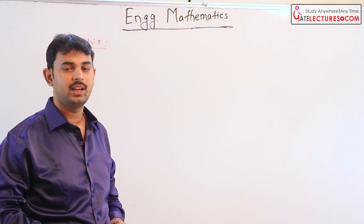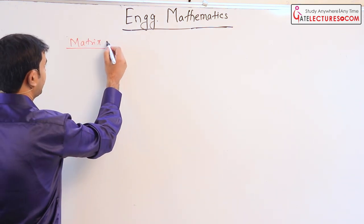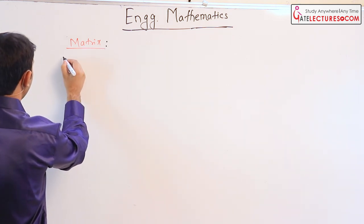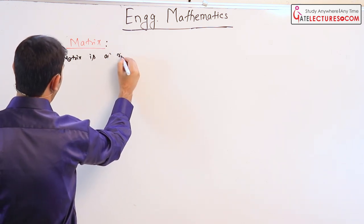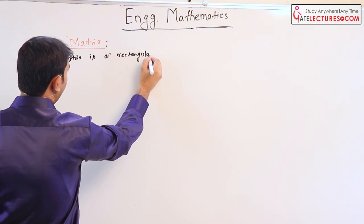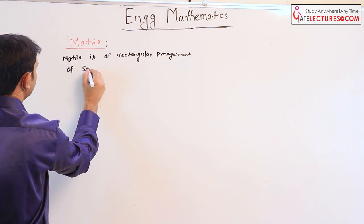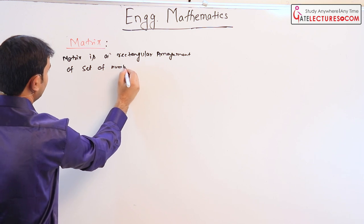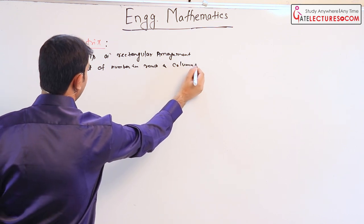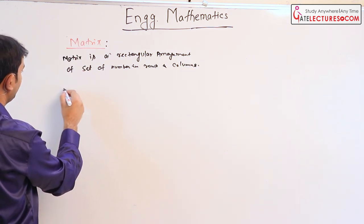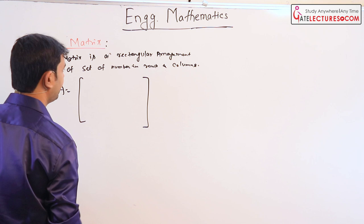First of all, what is a matrix? Actually, matrix is a rectangular arrangement of set of numbers in rows and columns. That means if our matrix is denoted as A, it is nothing but if you collect all the data and write it in the way.